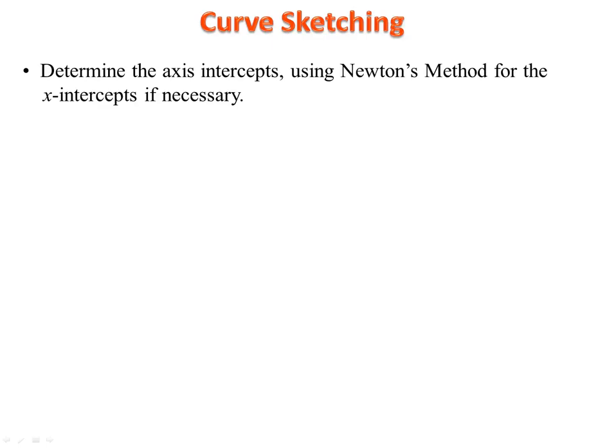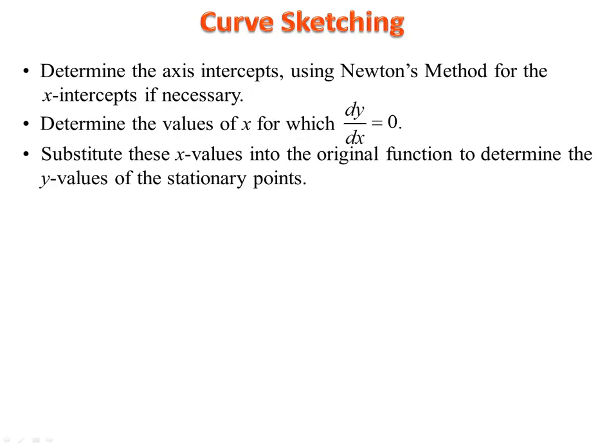Let's form a list of what you need to find — not necessarily in the order of finding, as that depends on convenience. You need to find the axis intercepts. For the x-intercepts, you may need to use Newton's method if the intercepts are irrational. Differentiate, equate the derivative to zero, and solve for x to find the x-values of the stationary point — the x-values for which the gradient of the curve is zero, where the curve is horizontal, parallel to the horizontal axis.